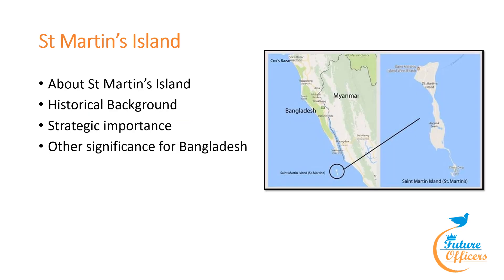Next topic: St. Martin's Island. Ousted Bangladeshi PM Sheikh Hasina claimed she could have stayed in power if she had given up St. Martin's Island and parts of the Bay of Bengal to the United States. The island is located in the north-eastern region of the Bay of Bengal, near the maritime boundary between Bangladesh and Myanmar. It lies about 9 km south of the Cox's Bazar–Teknaf Peninsula. The island is approximately 7.3 km long, mostly flat, with elevation of about 3.6 m above mean sea level, and is Bangladesh's only coral island surrounded by coral reefs extending 10–15 km to the west-northwest.